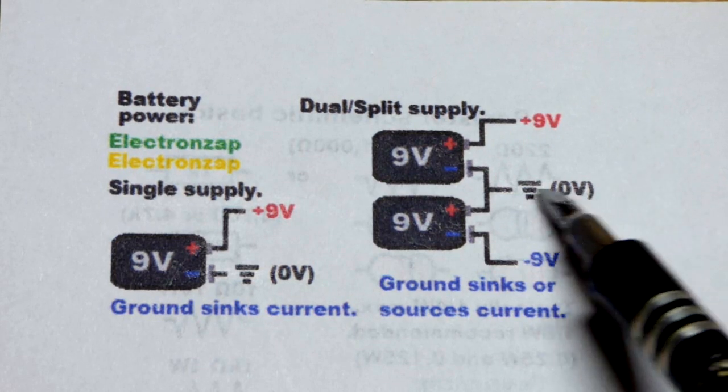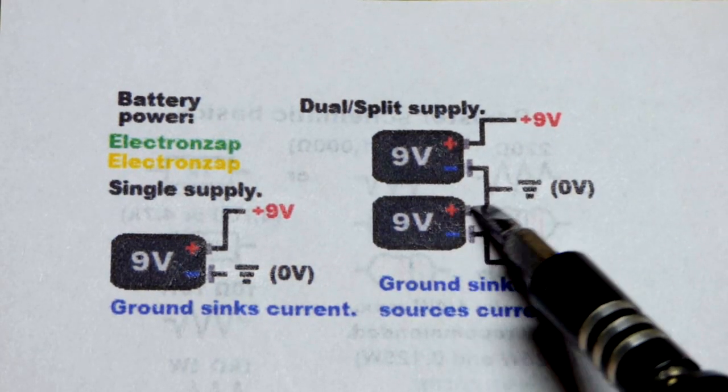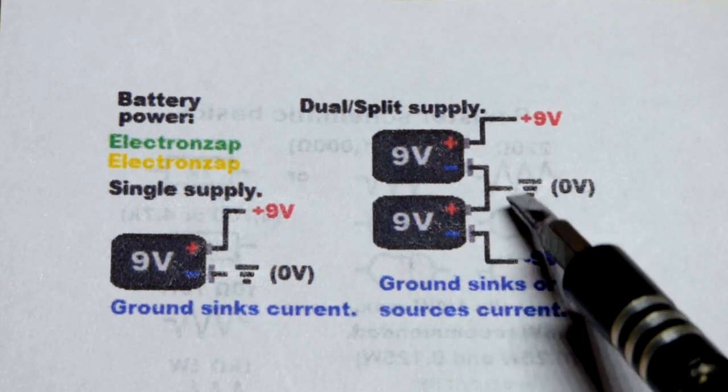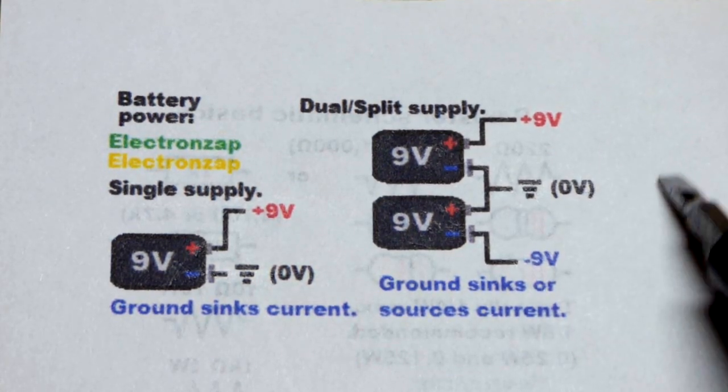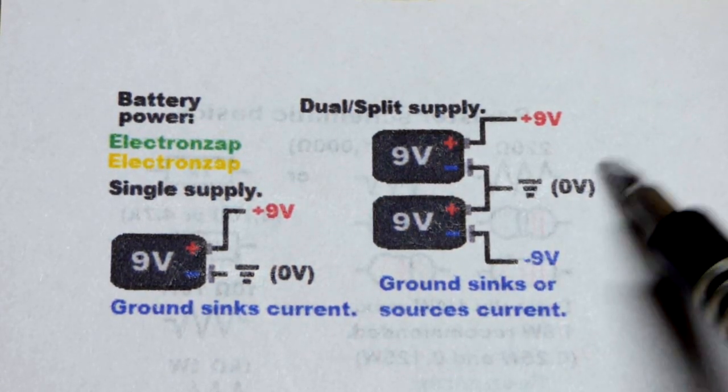You can sink current from that battery, or with this battery, it can be the source of current. So current can flow either way. You need to have more circuitry over here to control that, like an op-amp.